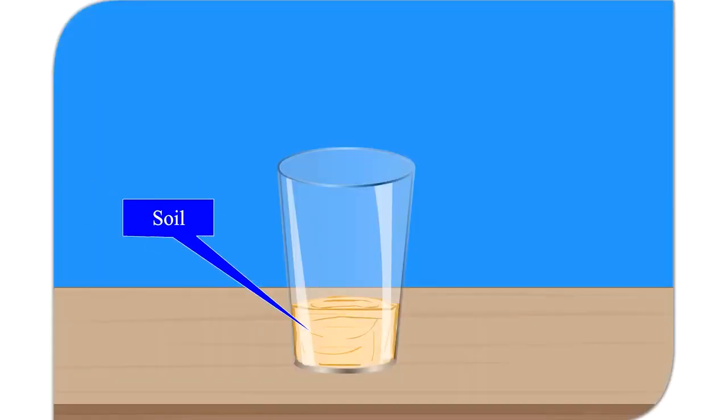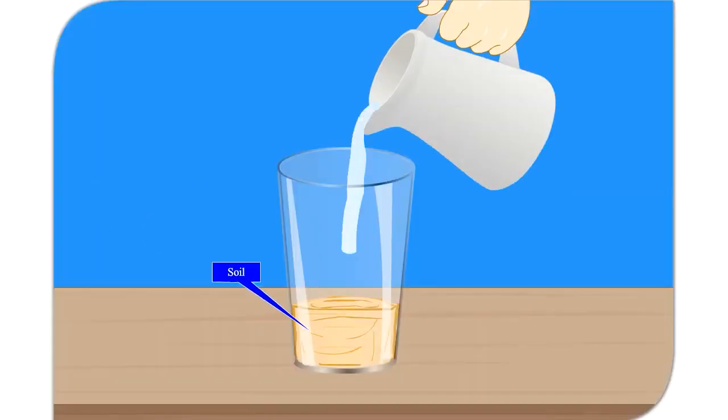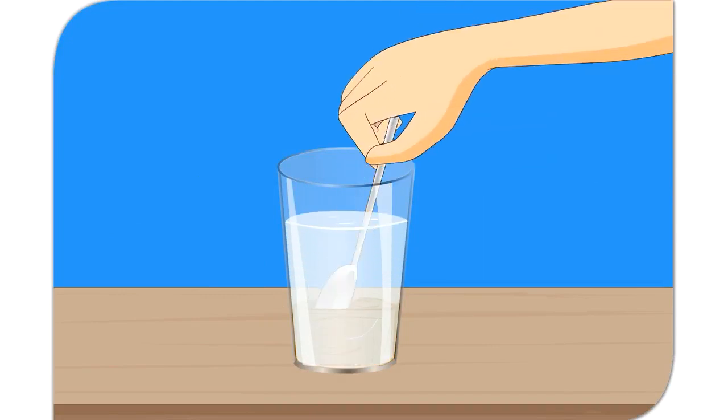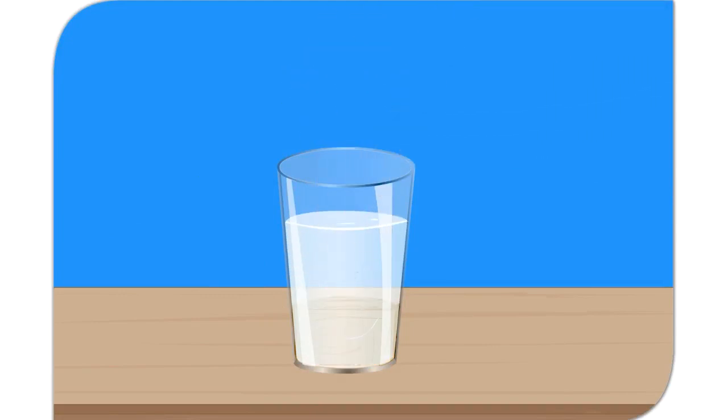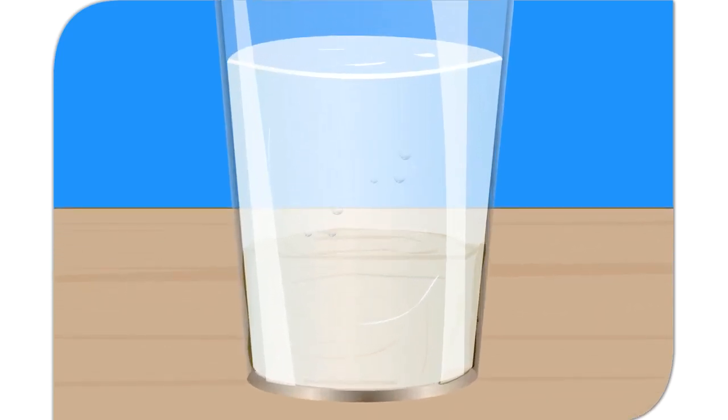Let us do this experiment. Take some garden soil in a glass, add water to this and stir the soil and water up. You will observe bubbles coming out of the soil. These bubbles are of the air present in the spaces between the soil particles. When water is mixed with soil, water takes up the spaces between the soil particles expelling out air. This proves that soil contains air.